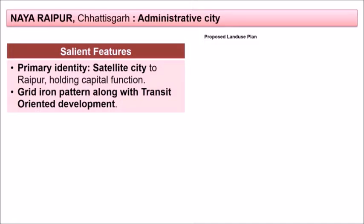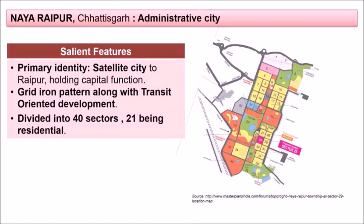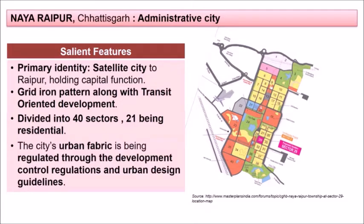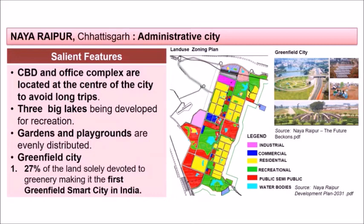The city was planned as a satellite city to Raipur, holding capital functions. It was developed on a gridiron pattern along with transit-oriented development. There were 40 sectors, of which 21 were planned as residential sectors, and the city's urban fabric was regulated through development control regulations and urban design guidelines. You can see from the map how uses were located.